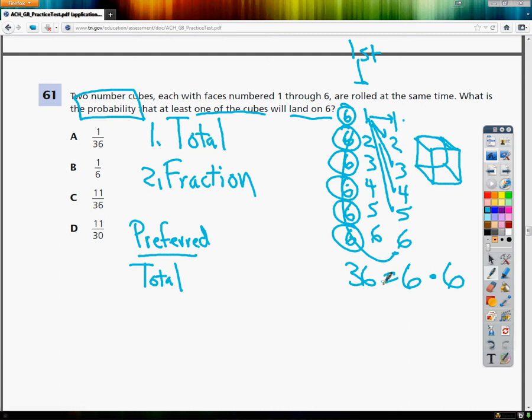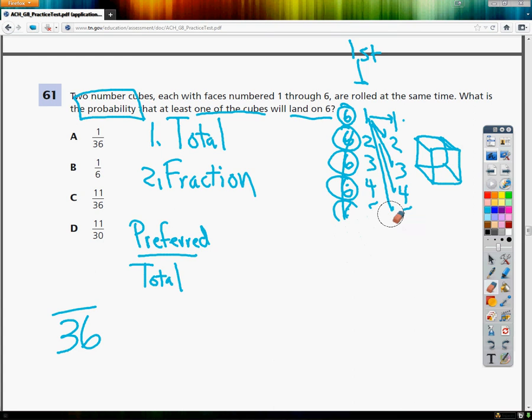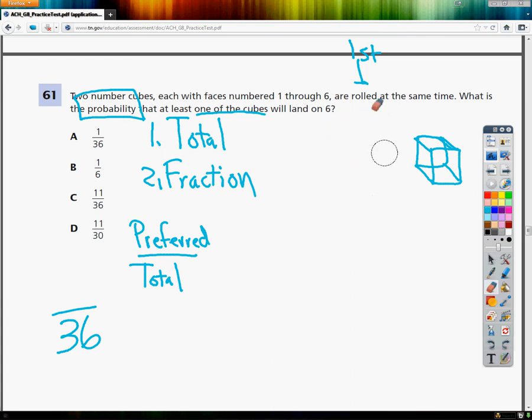So when I make my fraction, the bottom is going to be 36. Because that's the total number of possible outcomes that I could have by throwing those two die at the wall. Now, on top of my fraction, I need to put the preferred, or what I'm looking for, which in this case is one of those cubes at least is rolled a 6. So I'm going to think about the possible outcomes where I get a 6.